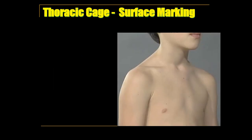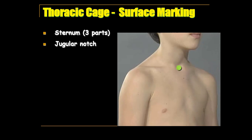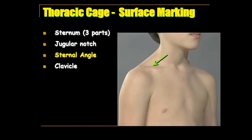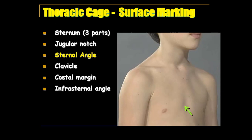Finally, regarding surface anatomy and important surface markings of the thoracic cage: you can feel the sternum at the midline of the thorax with its three parts — the manubrium, the body, and the xiphoid process. Above the sternum is the jugular notch, felt at the root of the neck. Just below it, you can feel an elevation corresponding to the sternal angle. The clavicle can also be felt as it is a subcutaneous bone lying between the root of the neck and the chest wall. Below the sternum, we can feel the costal margin made by the costal cartilages from the 7th to the 10th, and at its apex we have the infrasternal angle. The xiphoid process can be felt in this region.